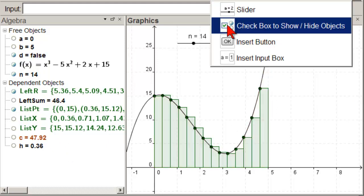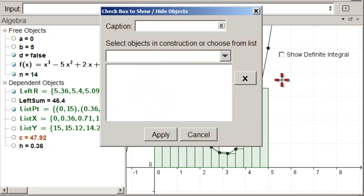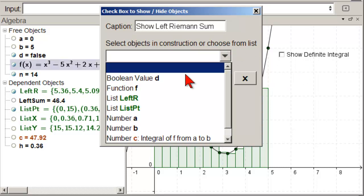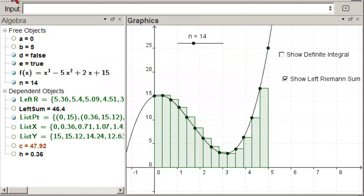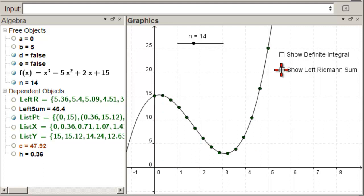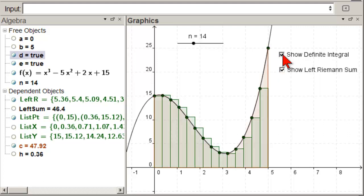If you want to put in a checkbox, that's very easy. Go to checkbox, put it down here, show Riemann sum, show left Riemann sum. And that would be left R. That would be the rectangles. Move it a little bit over. And so, we can turn this off. And that off. And we are done.